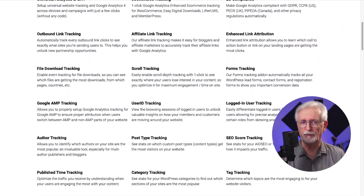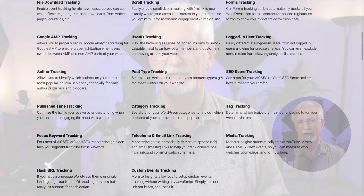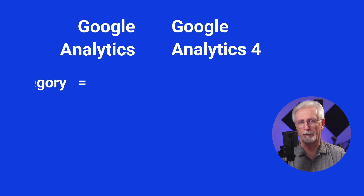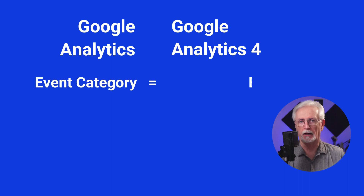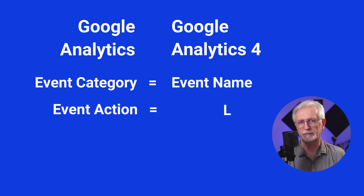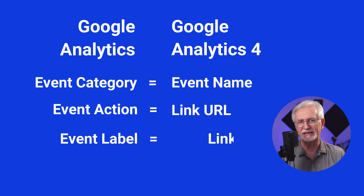Today I'm going to be focusing on how you can easily set up custom click events. Google Analytics events have different bits of information called parameters that you can use to track information about your important clicks. MonsterInsights uses the parameters that were required in Universal Analytics and automatically converts them to be used in GA4. So the Universal Analytics parameter event category becomes event name in GA4, the event action in Universal Analytics becomes link URL in GA4, and event label becomes link text.